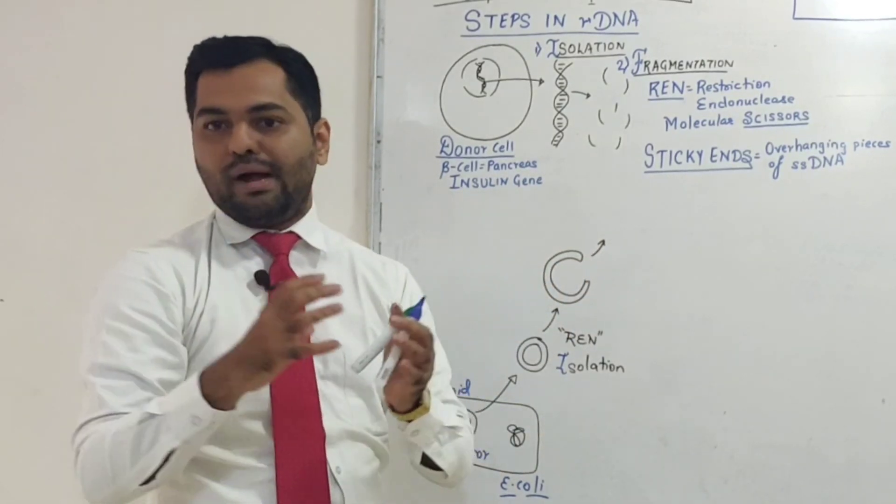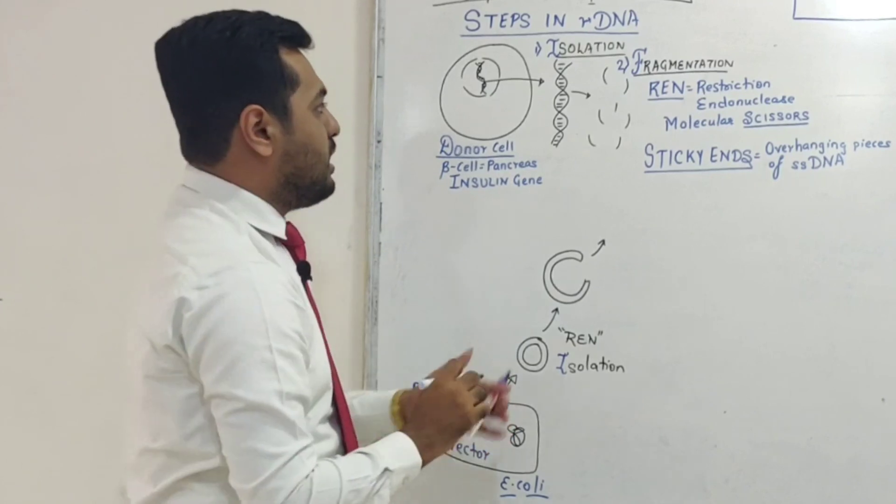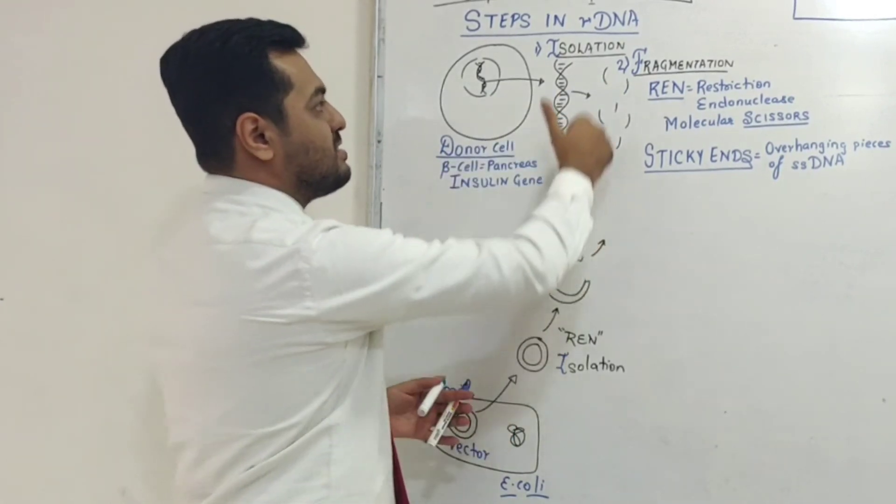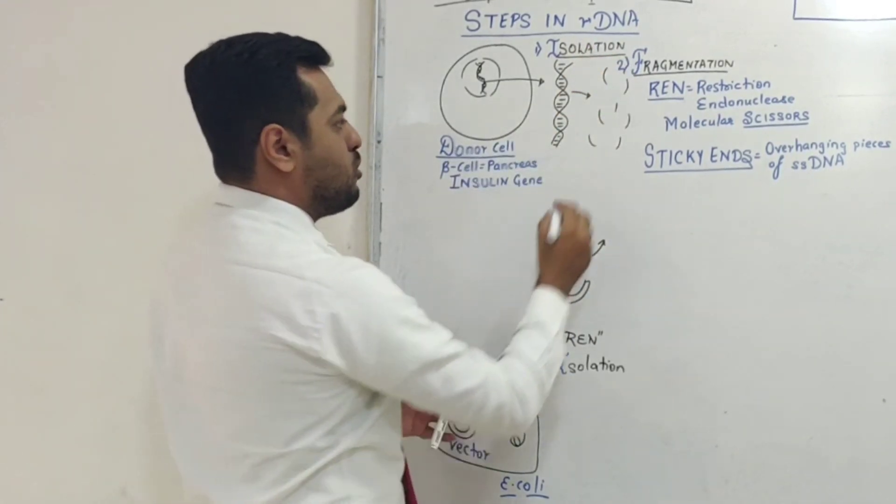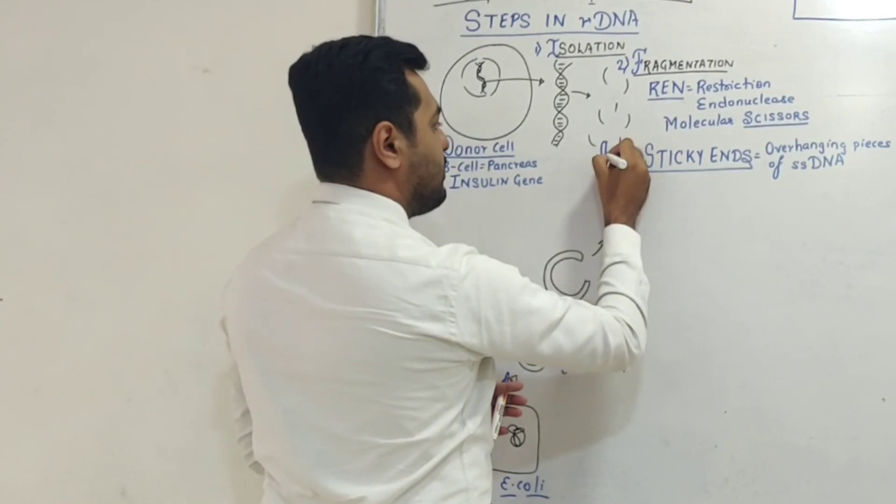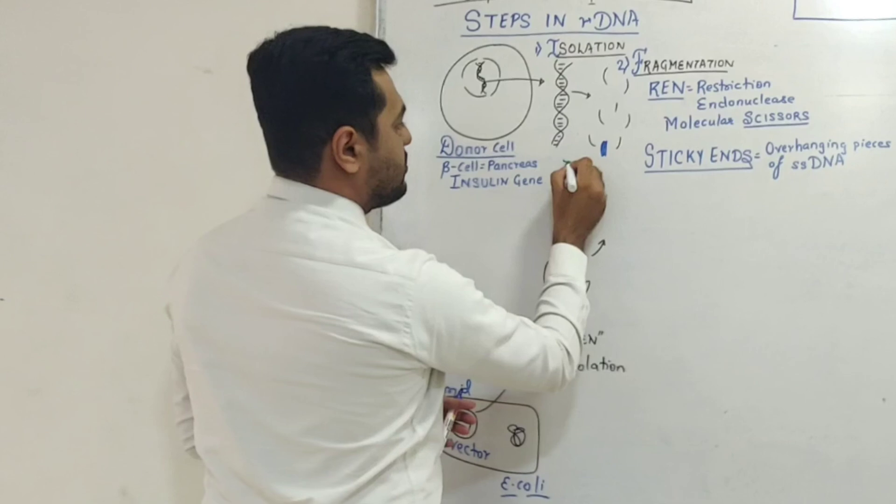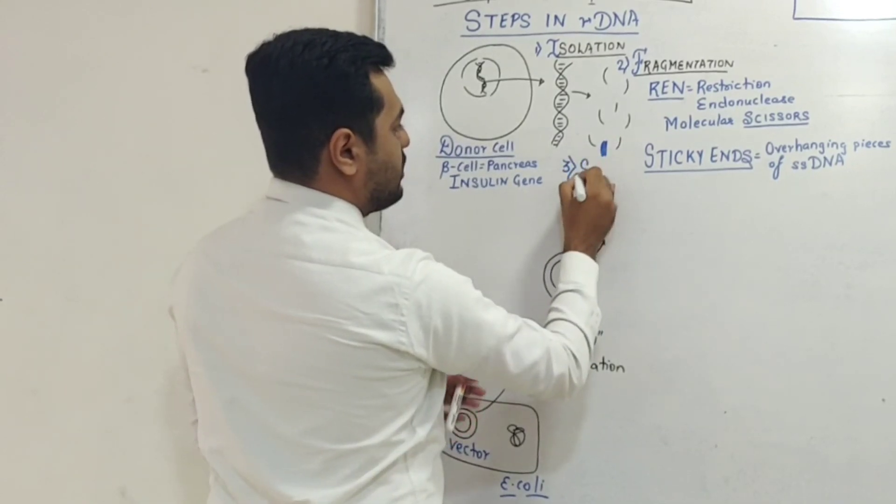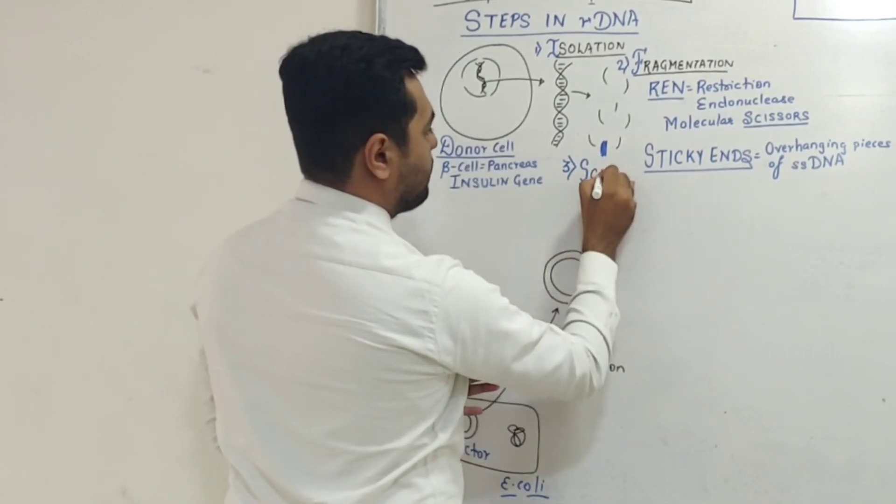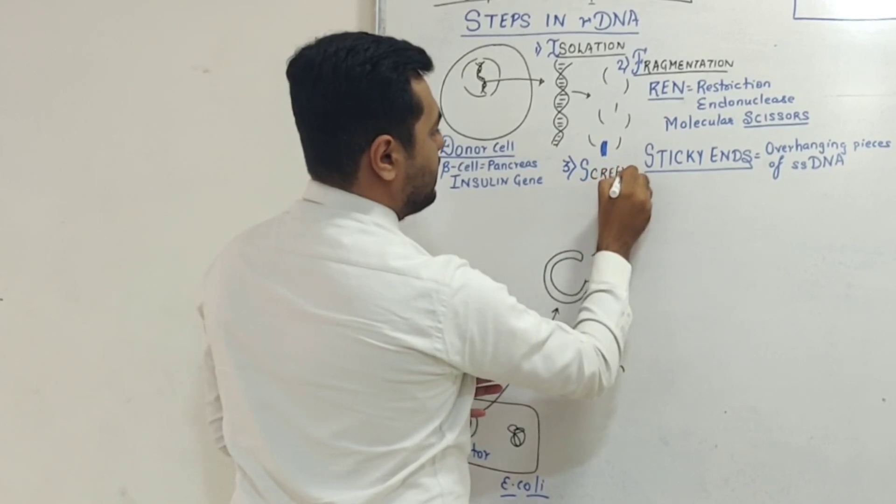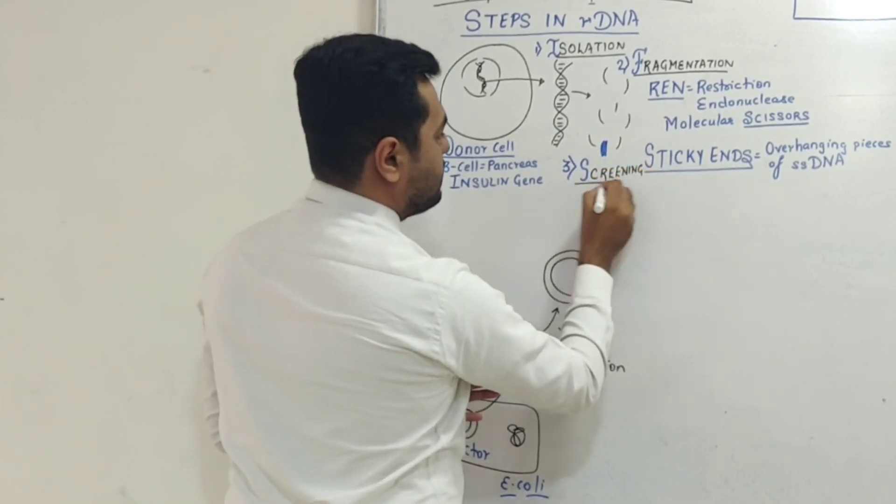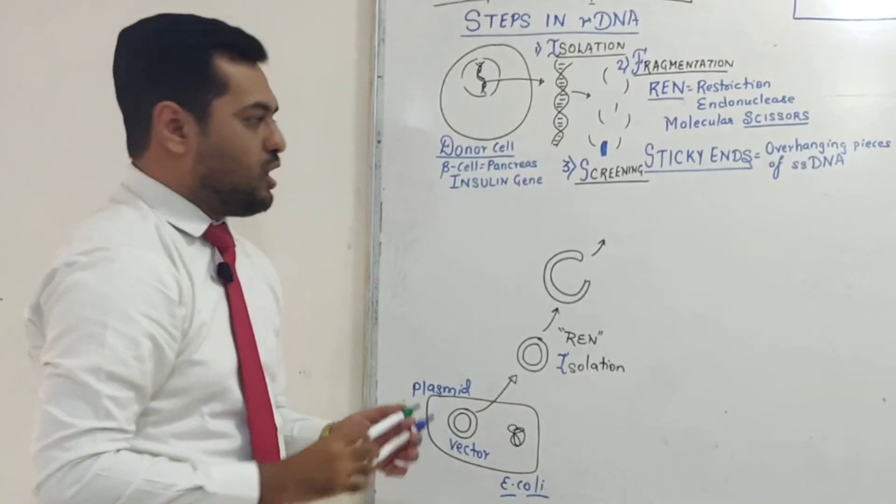After fragmentation, from all these DNA fragments, I have to find which one has my desired insulin gene. So that is going to be step number three - screening. In this step, we find and extract the desired gene.